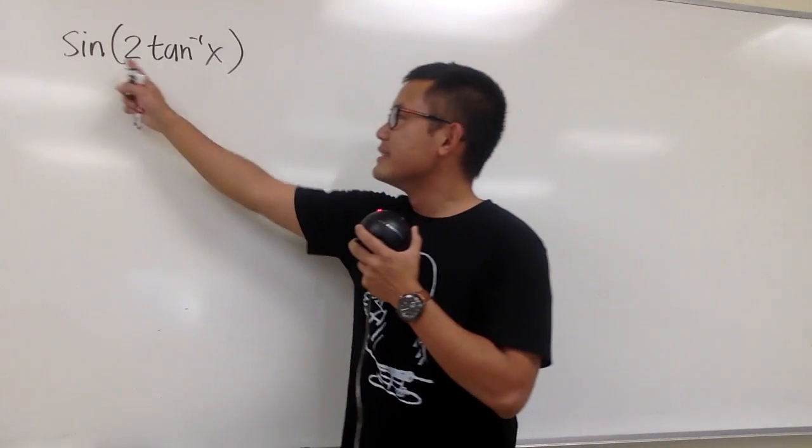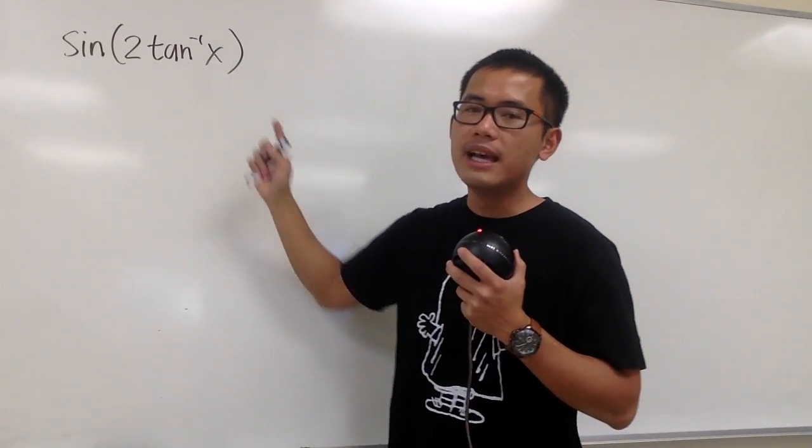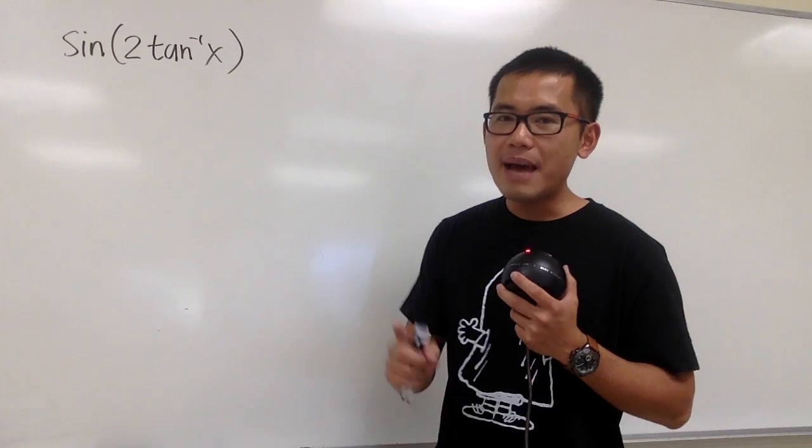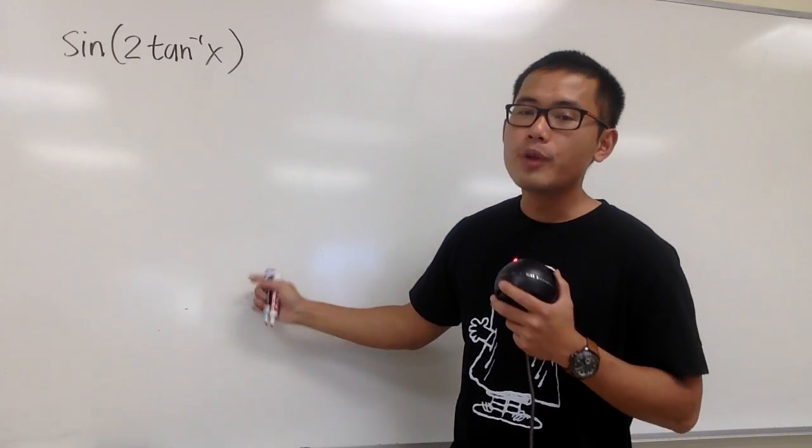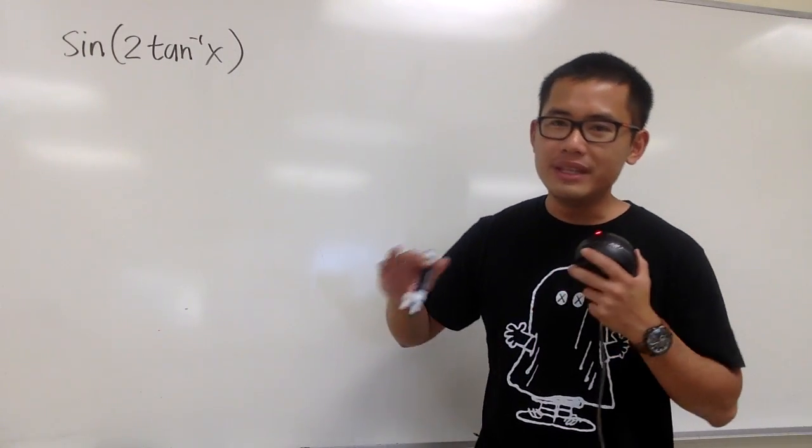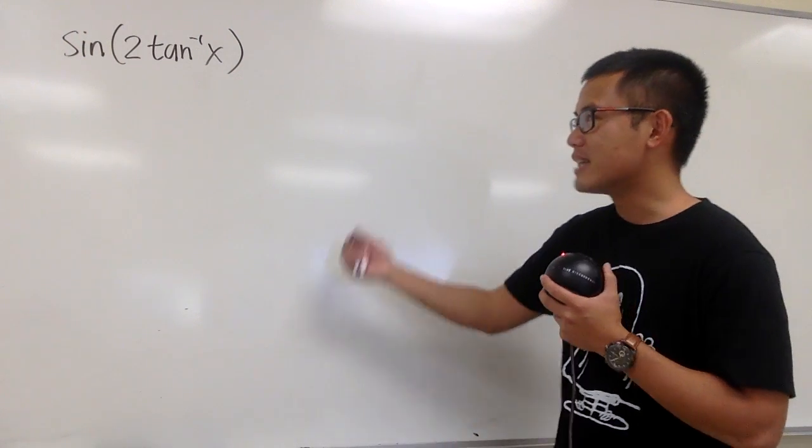I'm going to show you how to write sin(2 tan⁻¹x) as an algebraic expression, and that means at the end of our answer, we cannot have any more of the trig functions or the inverse trig functions. This is how we're going to do it.